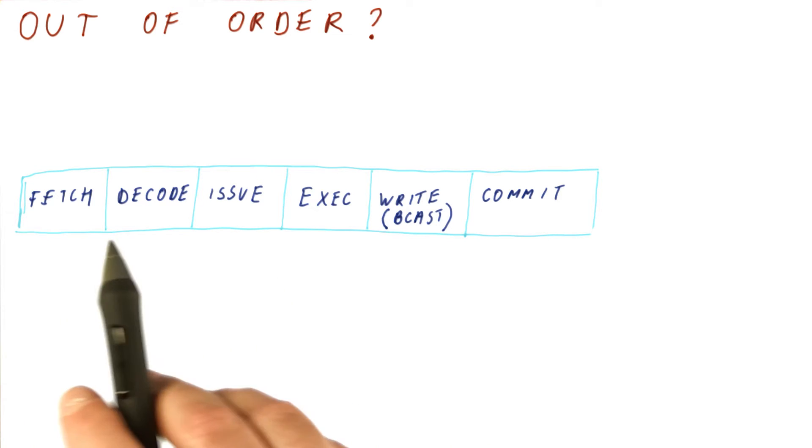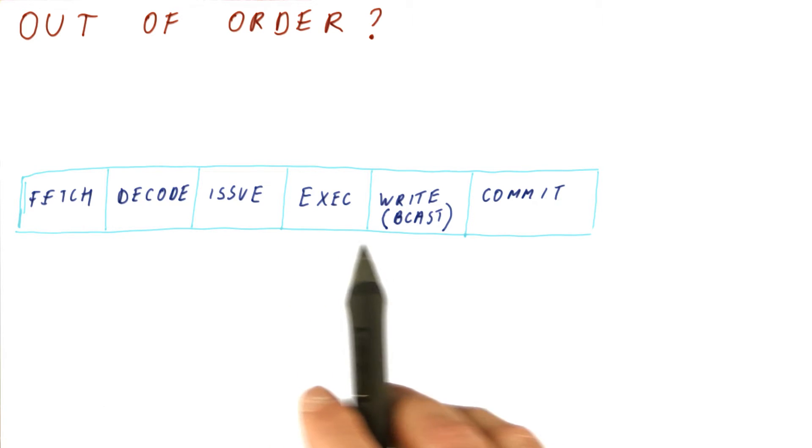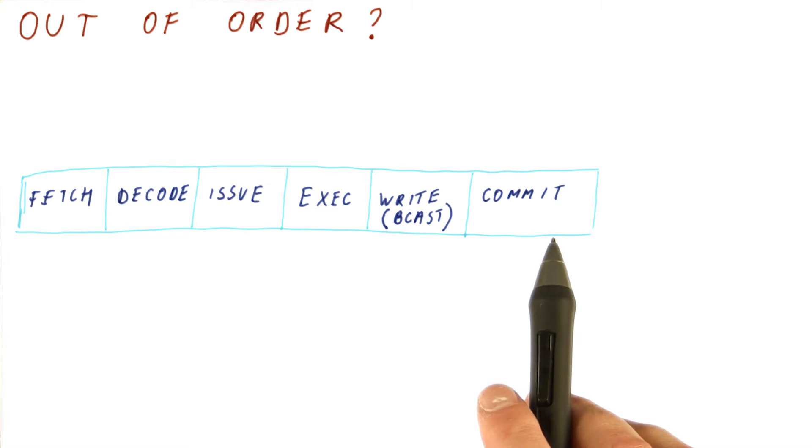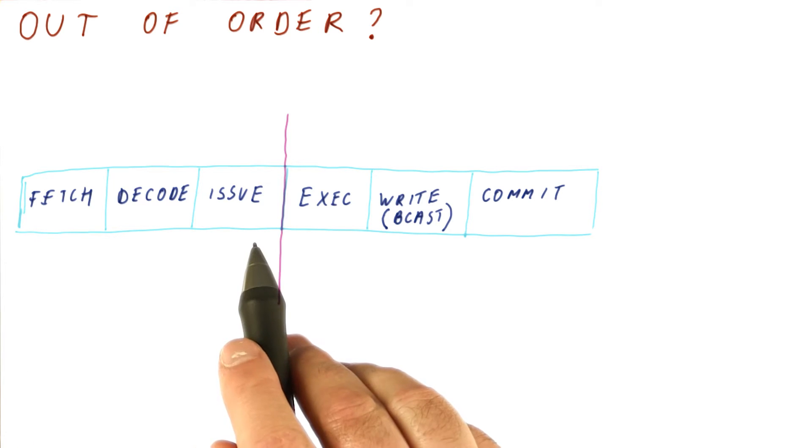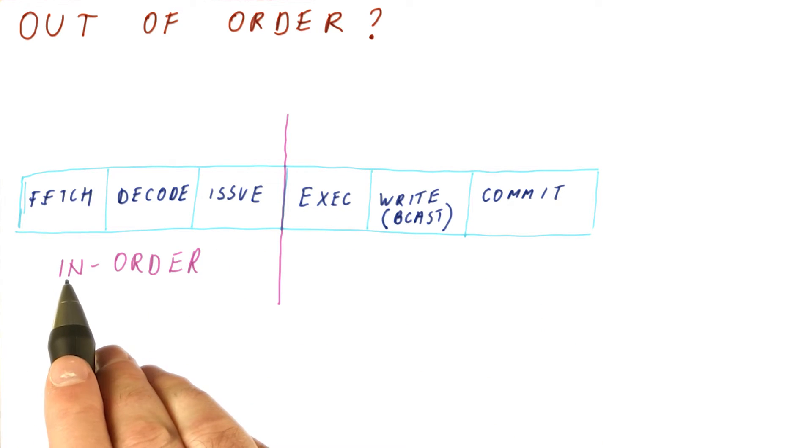So in this pipeline, if this was an out-of-order processor, keep in mind that not all of these stages are processing instructions out of order. In fact, from fetch up to issue, we are processing instructions in order.